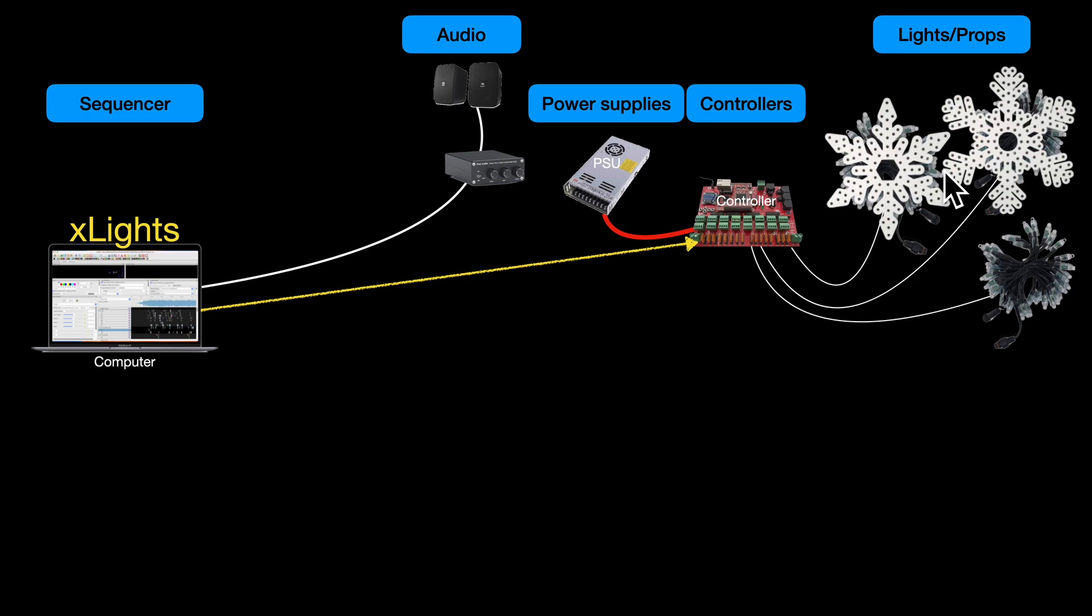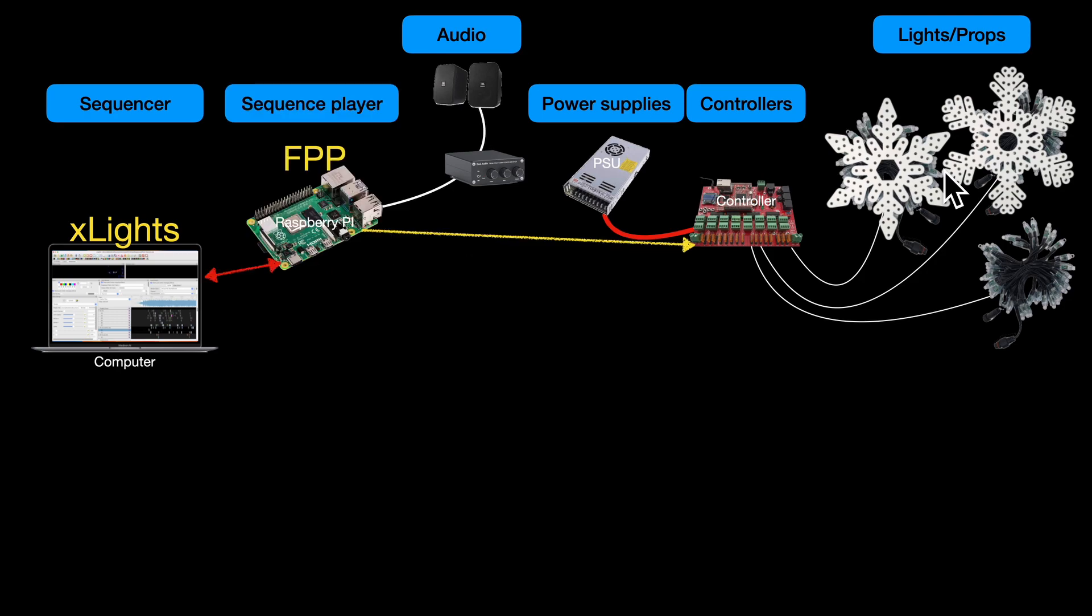The disadvantage to using the computer is that if the computer crashes or it gets turned off or used for other things, then the sequence goes dark. So what tends to happen, not always but tends to happen, is that people have a separate little device called a sequence player.